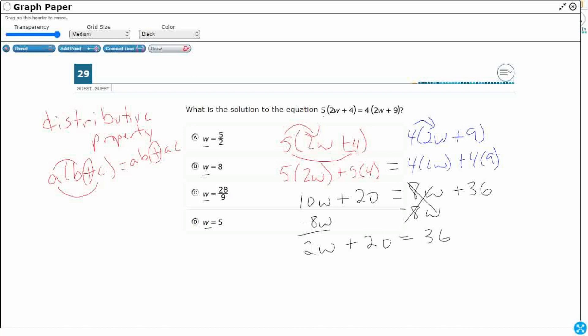Let's move that over there. Right now I need to move this 20 over. So I'm going to use the inverse operation, plus 20 minus 20. Subtract 20 from both sides. You're going to get 2W equals 16.